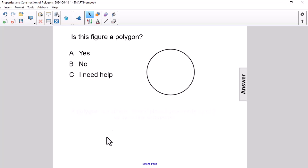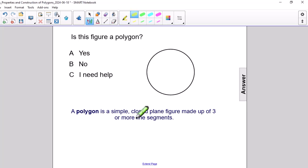I'm going to pull up the definition of a polygon. This says a polygon is a simple closed plane figure made up of three or more line segments, and I'm going to focus on the last part of that definition.